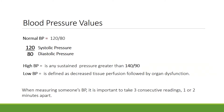Normal blood pressure is defined as 120 mmHg over 80 mmHg. The top number, 120, is the systolic pressure, and the bottom number, 80, is the diastolic pressure. High blood pressure is defined as any sustained pressure greater than 140 over 90. Low blood pressure does not have a number associated with it; instead, it's defined as decreased tissue perfusion followed by organ dysfunction. When measuring blood pressure, it's important to take three consecutive readings at least one or two minutes apart.